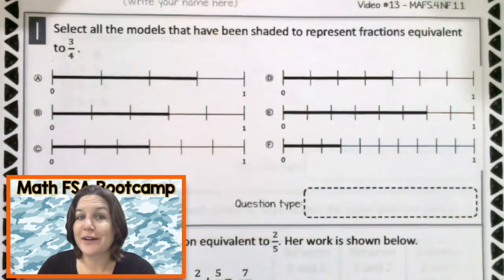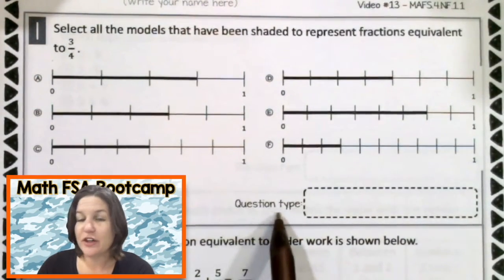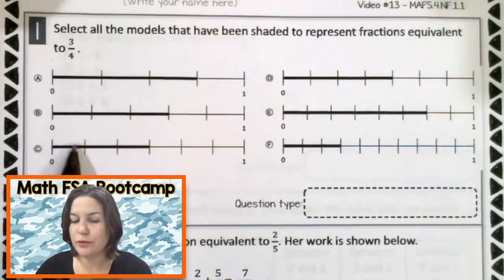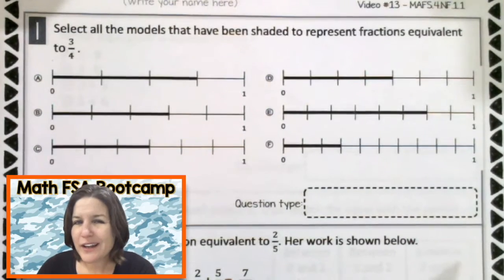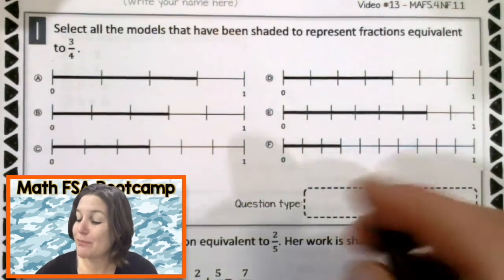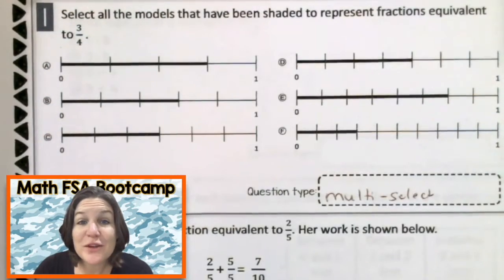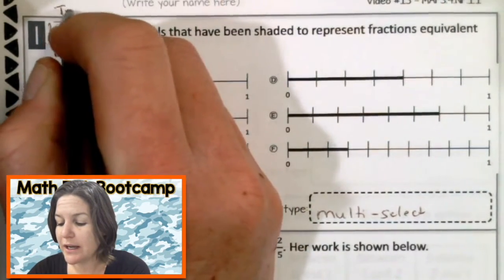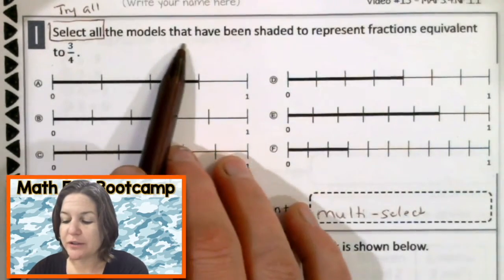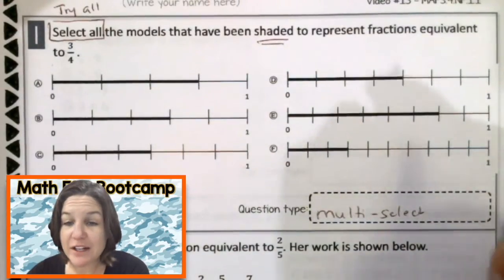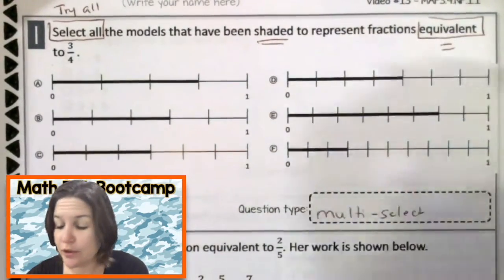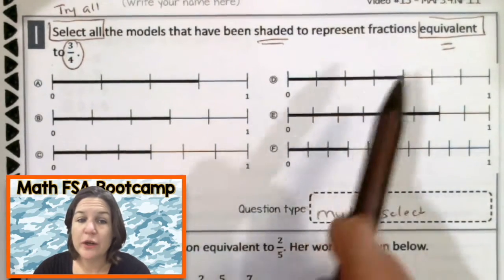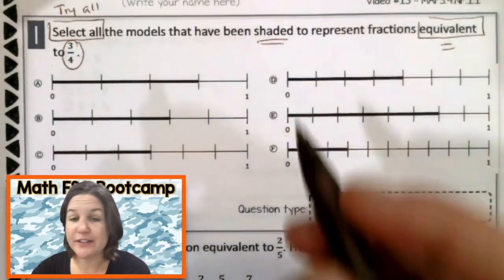All right, everybody. Welcome back. So first things first, you know what I like? I like to go ahead and identify the question type first. I'm seeing select all real quick, and I'm also seeing one, two, three, four, five, six answer choices. So what kind of question is this? It's a multi-select. Jot that down if you did not already. All right, now let's go ahead and mark up our problem. So this says select all. That means that we are going to try all. Select all the models that have been shaded to represent fractions equivalent, which means equal, to three-fourths. All right, so we have a bunch of number lines here, and we need to see which ones are equal or equivalent to three-fourths.